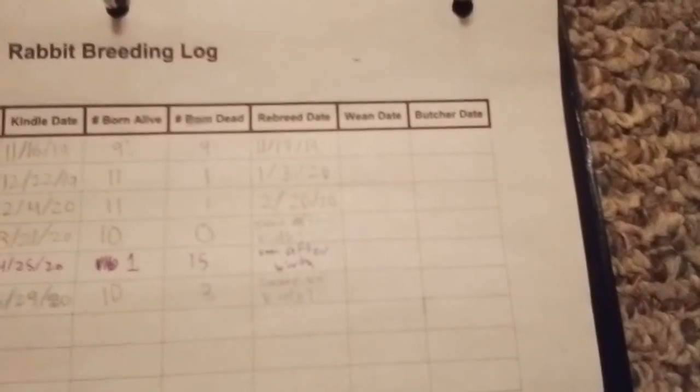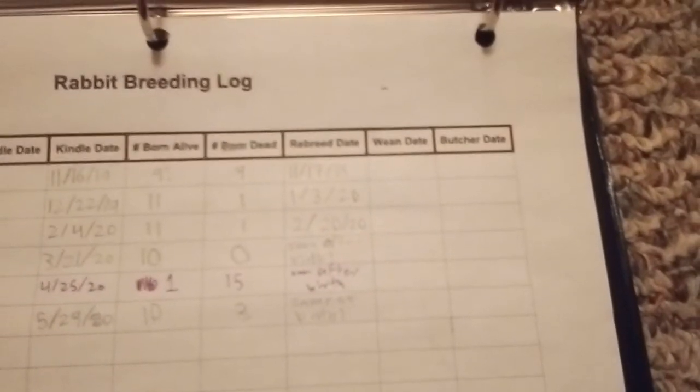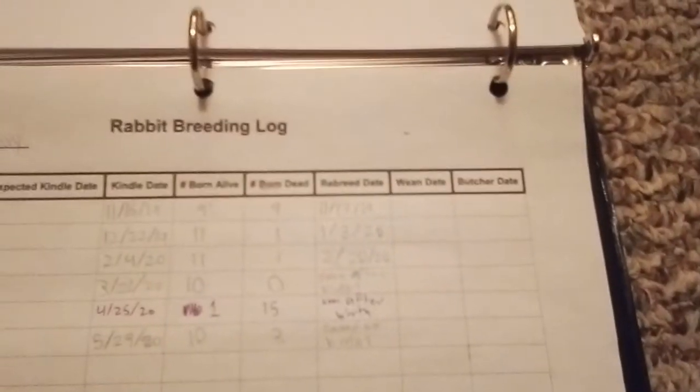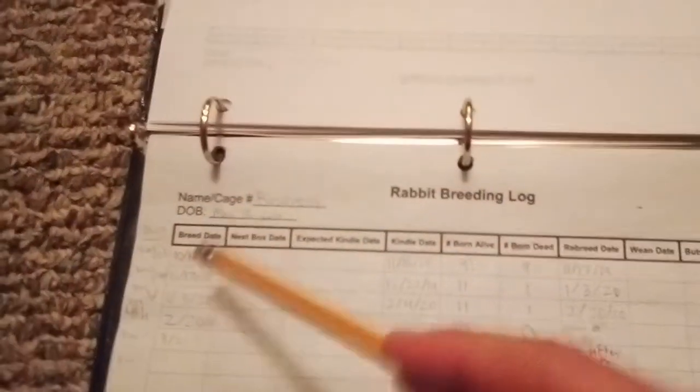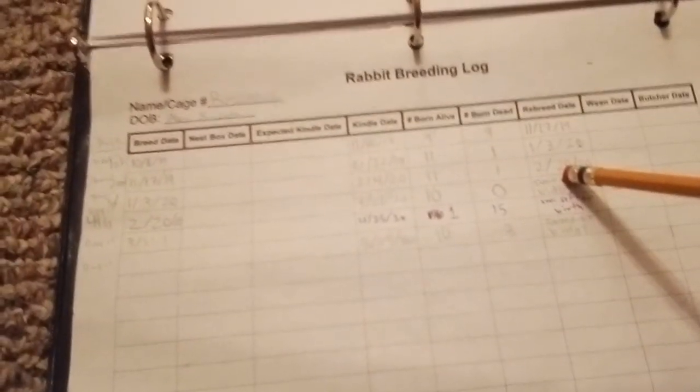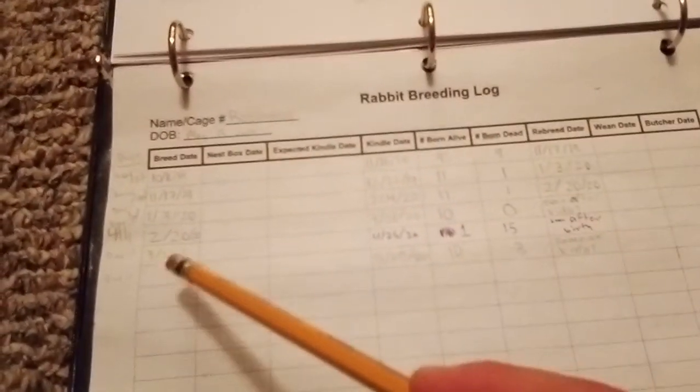They have the rebreed date. We don't know when our does are rebred because they're in a colony. It kind of doesn't make much sense to me - you have the breed date and the rebreed date, so I guess if you're filling this out you put rebred this day and then you put the same date right there for the next line.